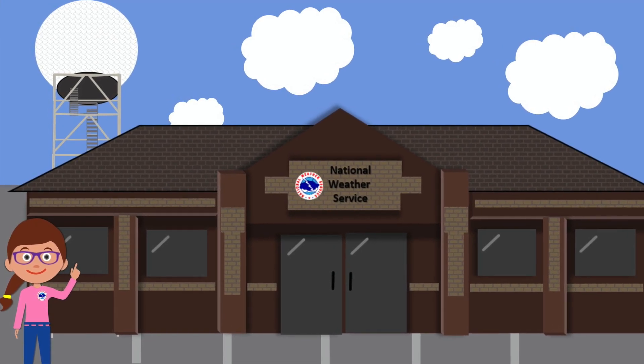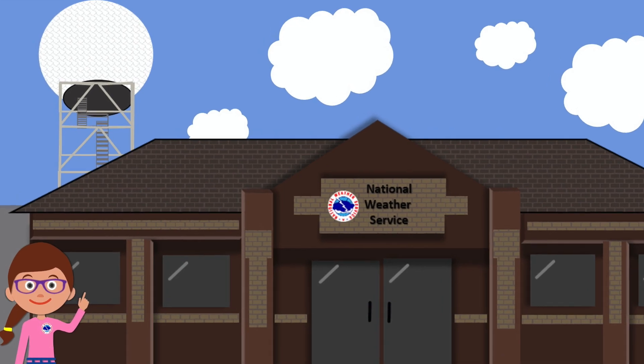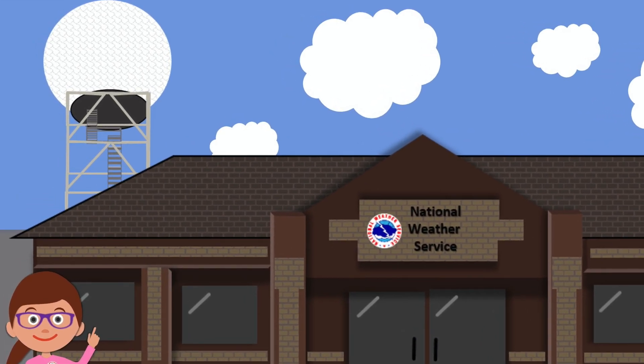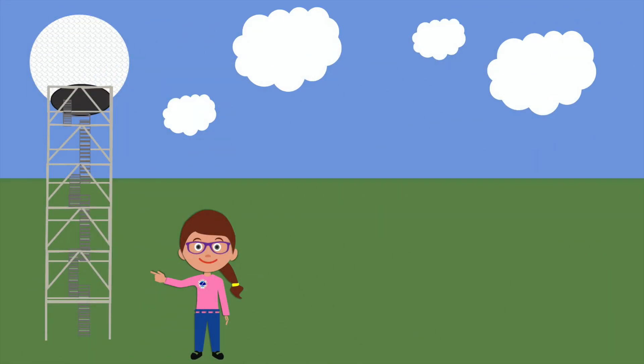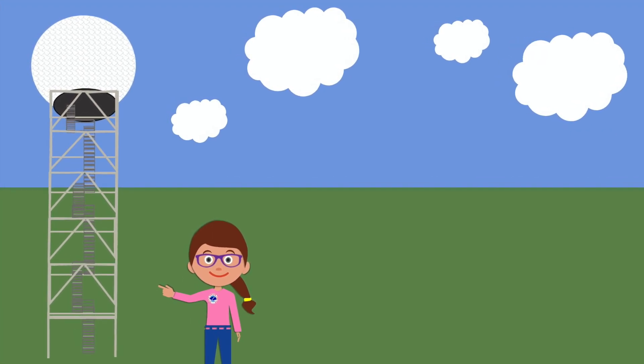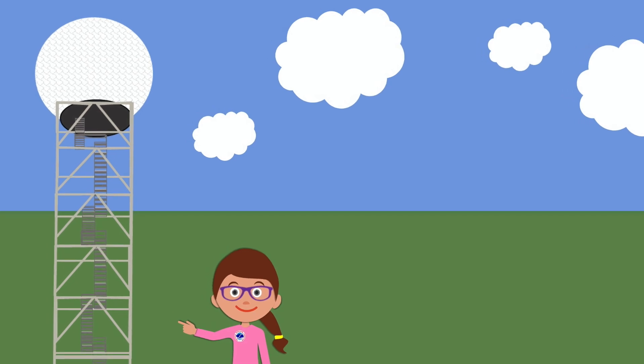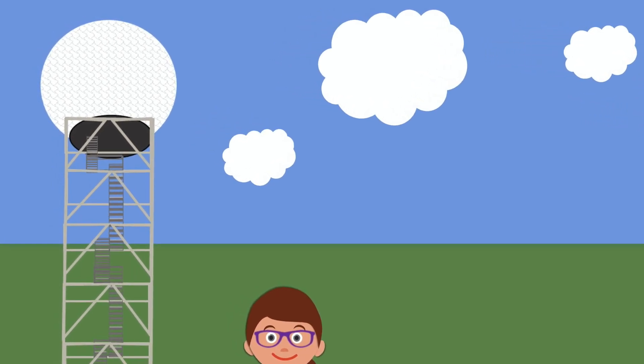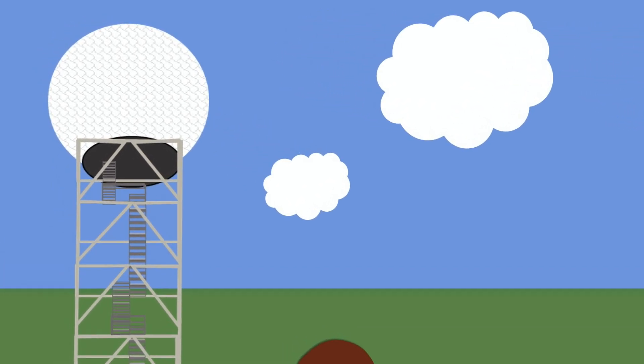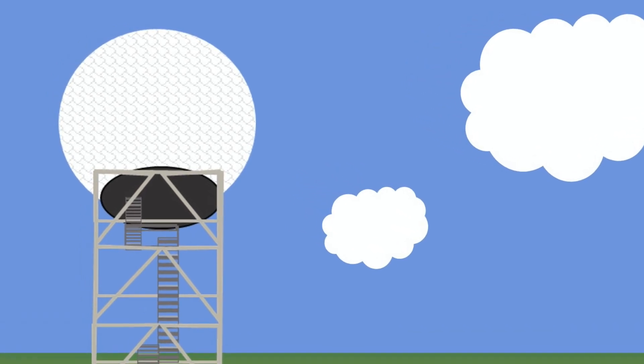See that tall tower behind our office? Let's take a closer look. That's called a radar and it helps us to see if any rain or snow or thunderstorms are coming. It kind of looks like a giant golf ball from the outside but it looks much different inside. Do you want to go see what it looks like up there?